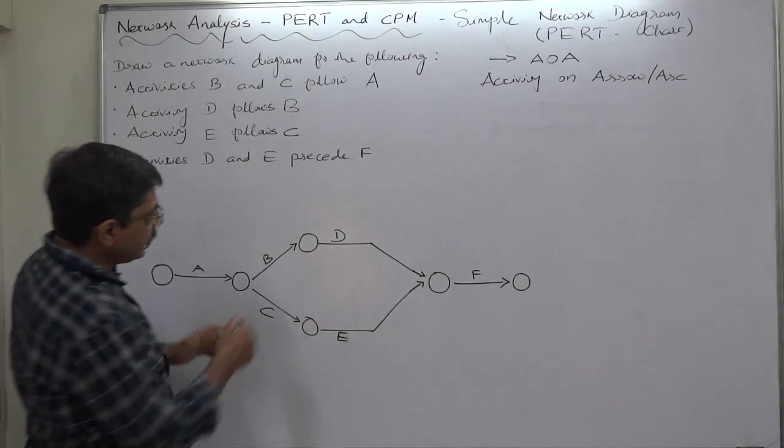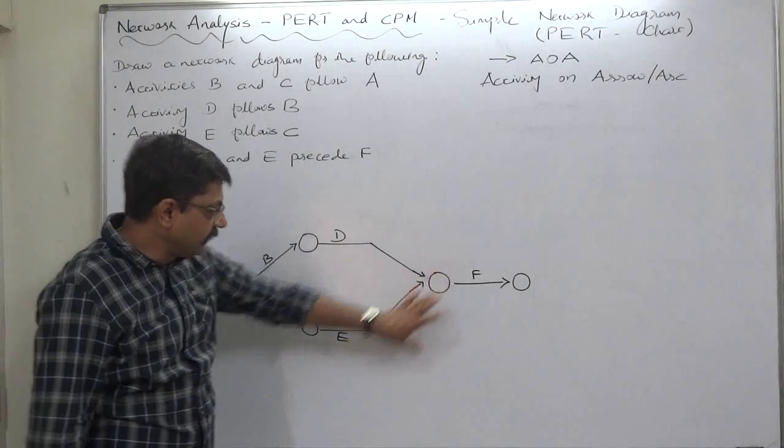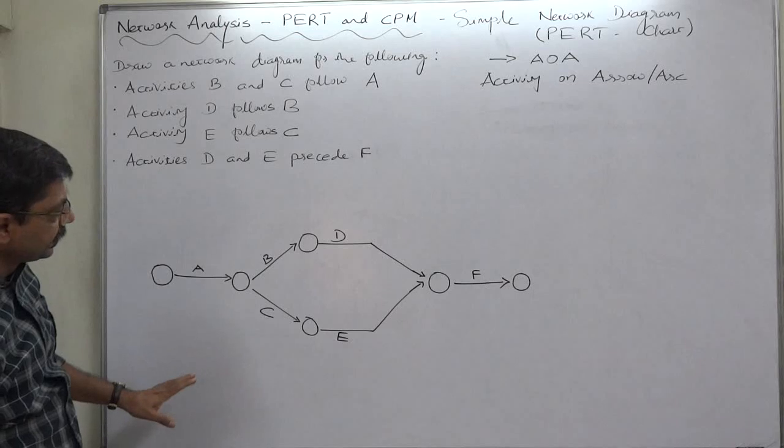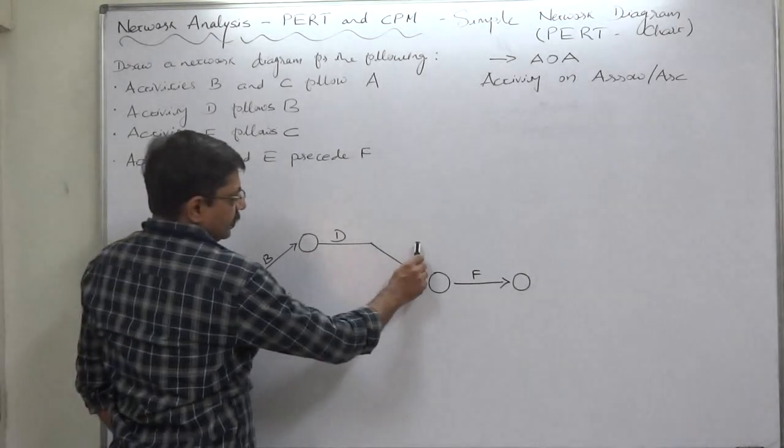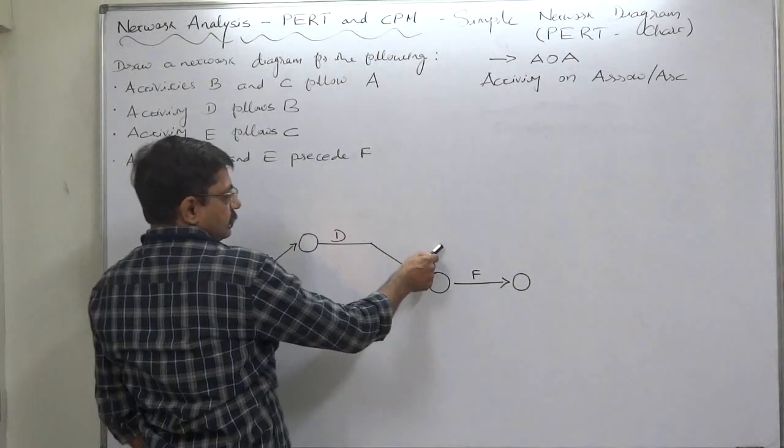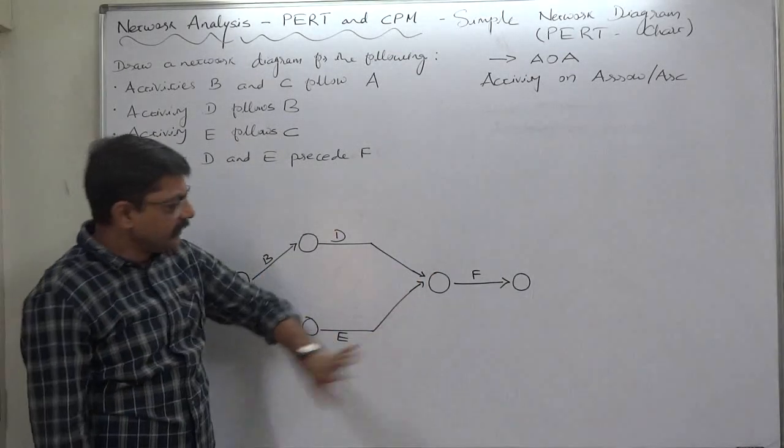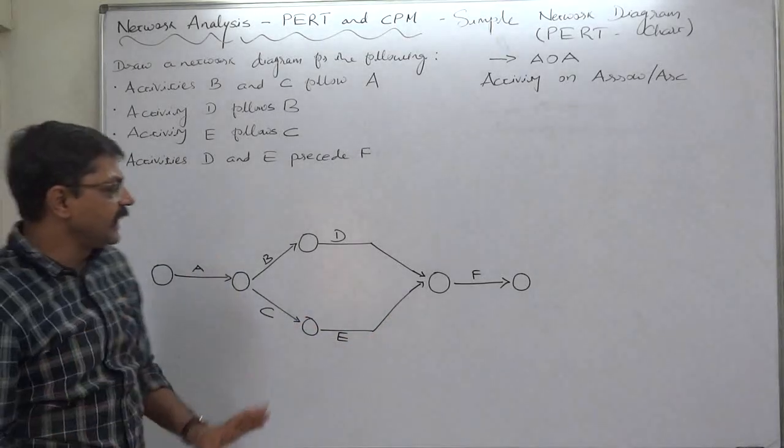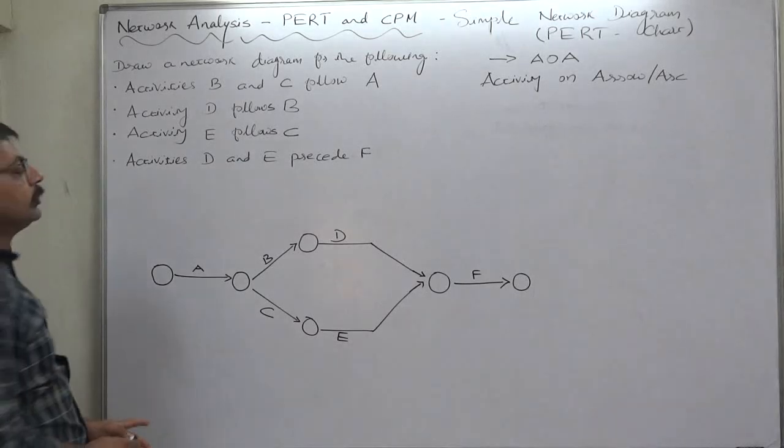It is not compulsory to give this kind of pattern or design. You can directly draw the two straight arrows up to this event or you can draw this one as straight, this one as slant with slope. It is now upon you which kind of pattern or which kind of picture do you want to show.